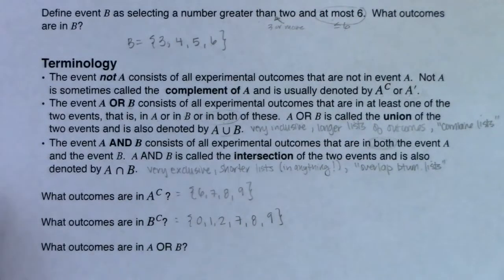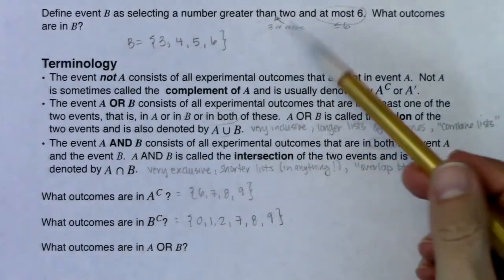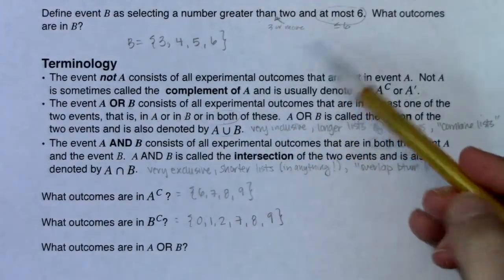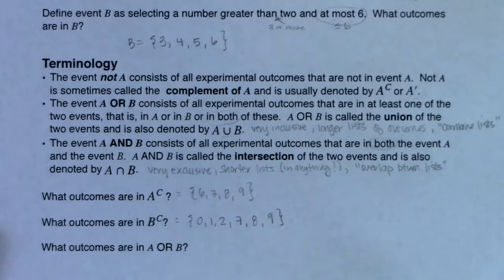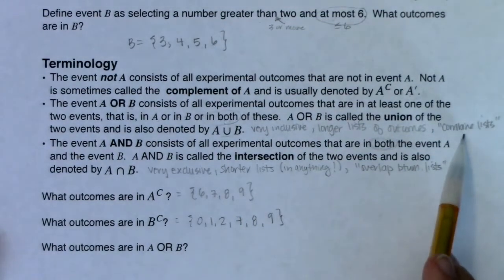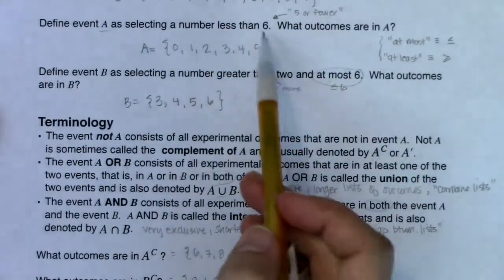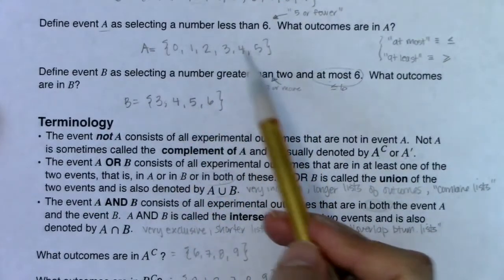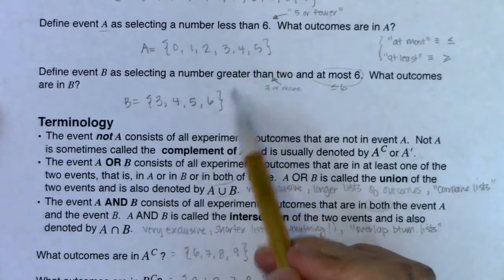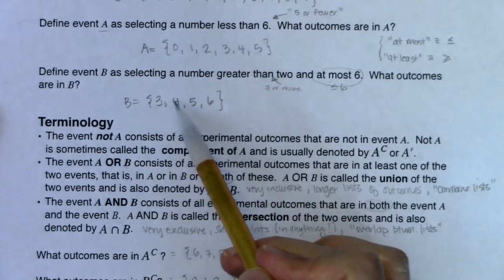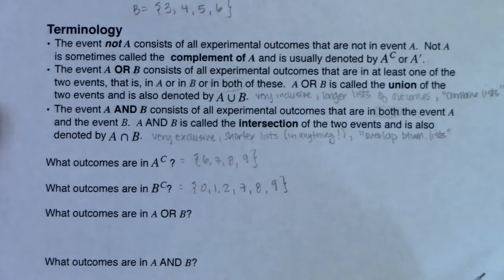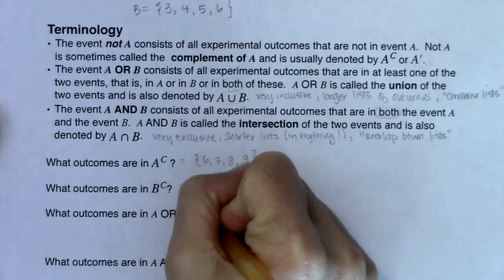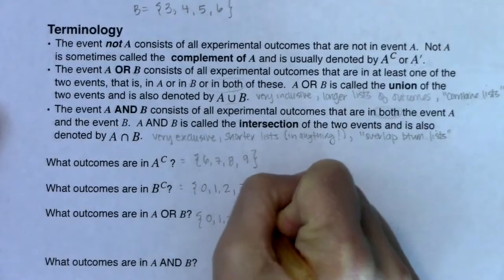Every outcome in the original sample space — 0 through 9 — is either in A or A complement. Similarly, it's either in B or B complement. For A or B, we combine the lists. A has 0, 1, 2, 3, 4, 5, and B has 3, 4, 5, 6. Since 3, 4, and 5 are repeats, we ignore them and just add 6. So A or B gives us 0, 1, 2, 3, 4, 5, 6.